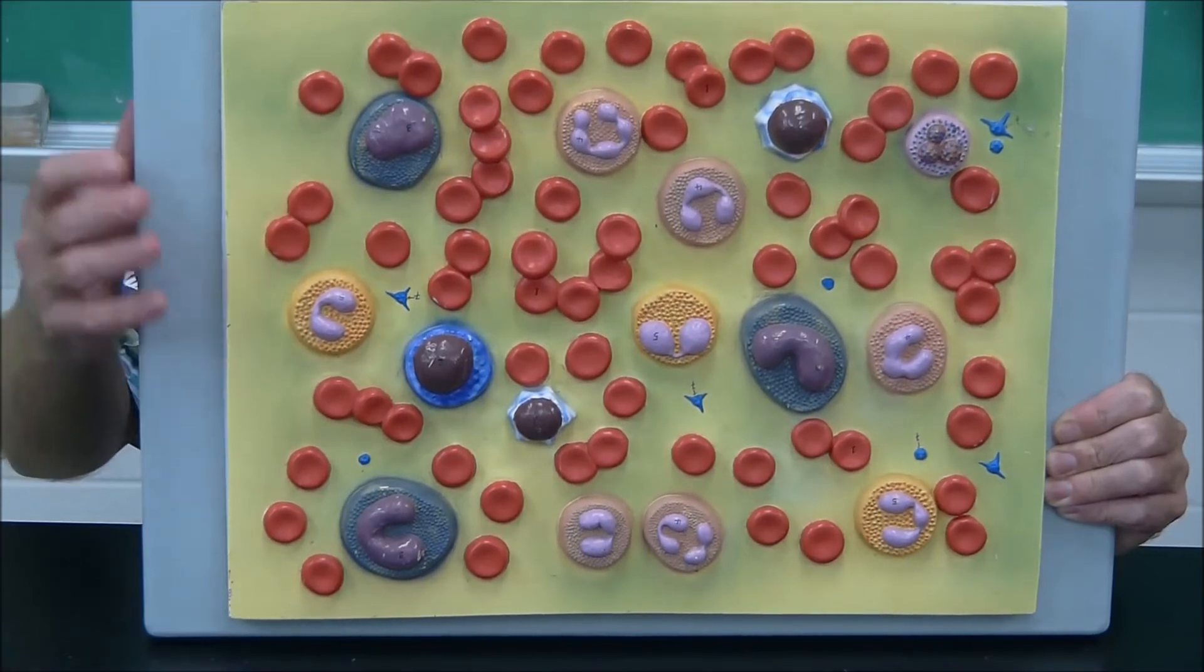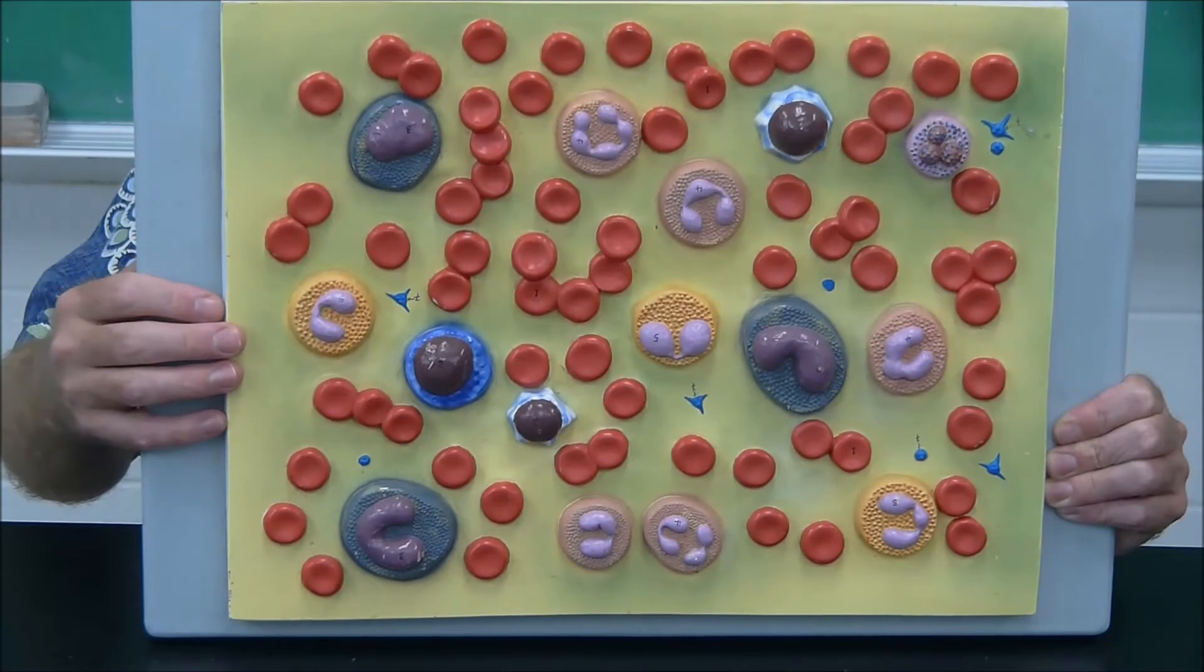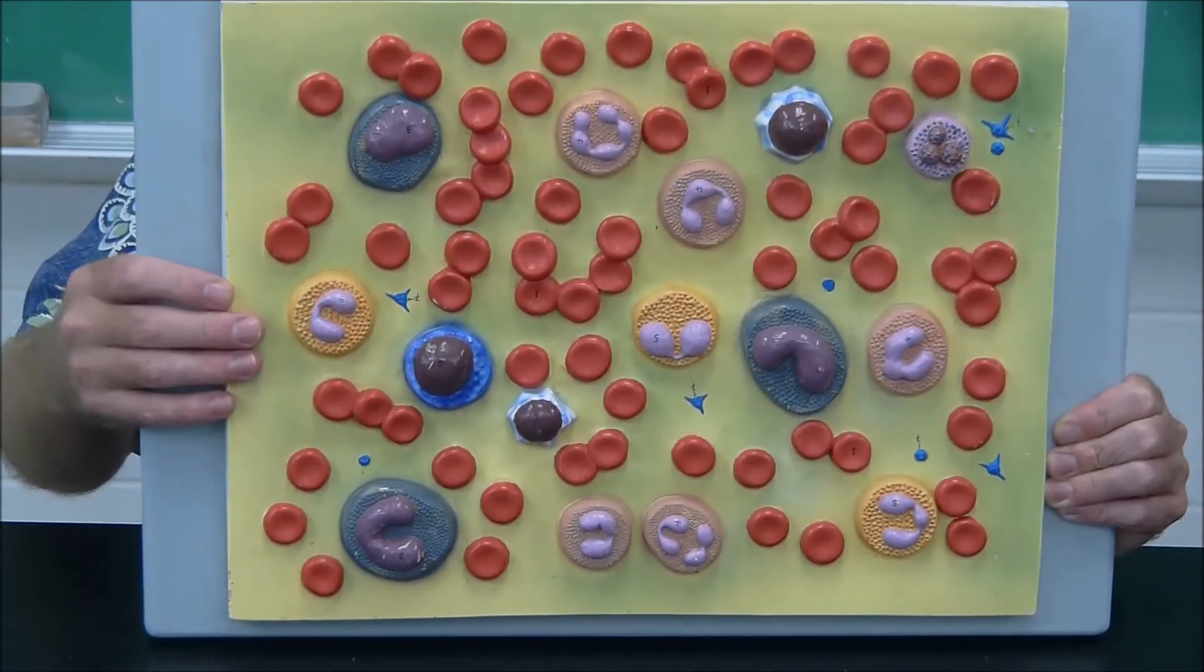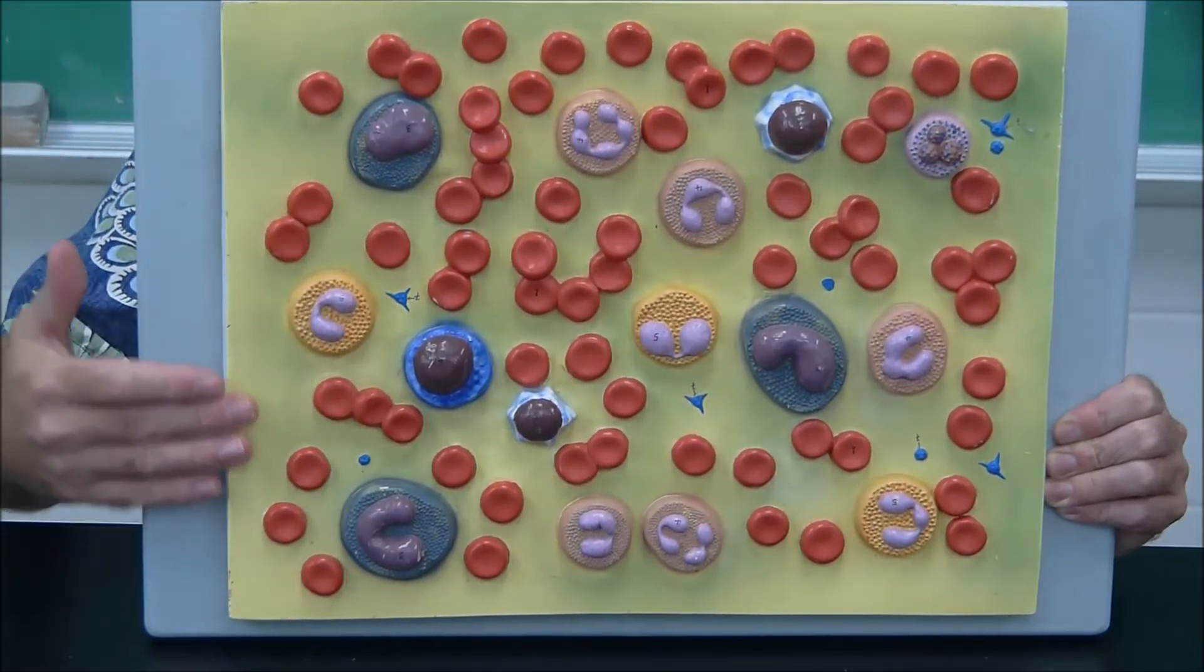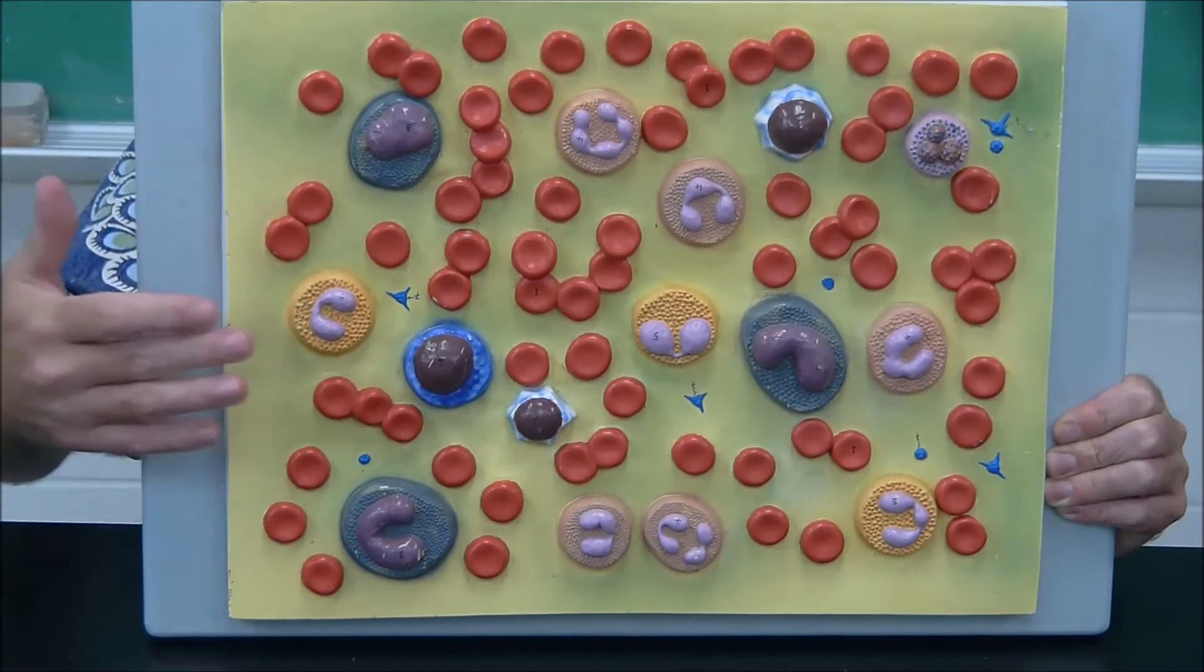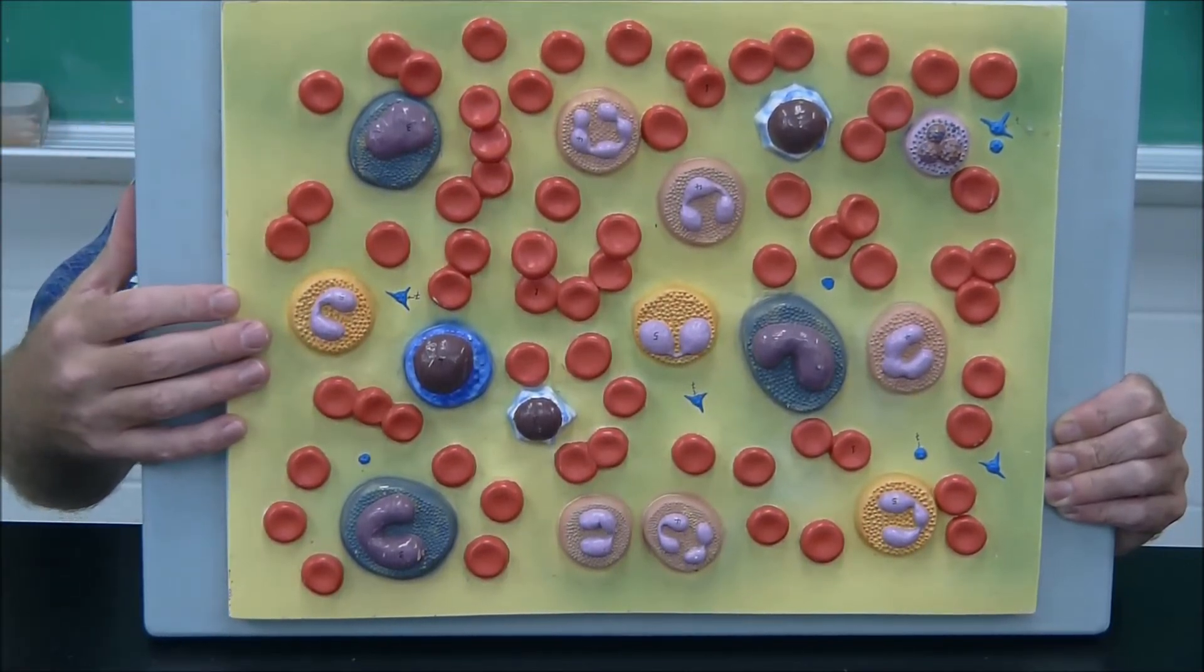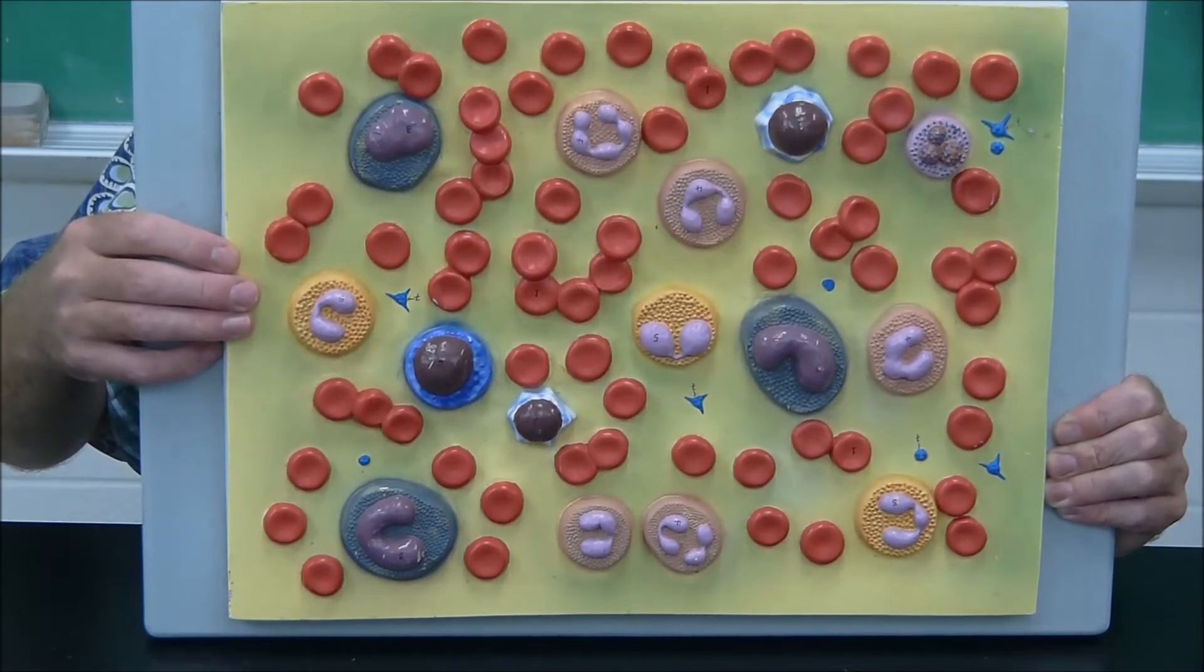In a differential white blood cell count, we count 100 white blood cells and see what proportion are neutrophils, eosinophils, basophils, etc. You would never see this many white blood cells in one field of view under the microscope, but it's here to help us learn how to make a differential count. What I want you to do now is look at the total number of white blood cells here.